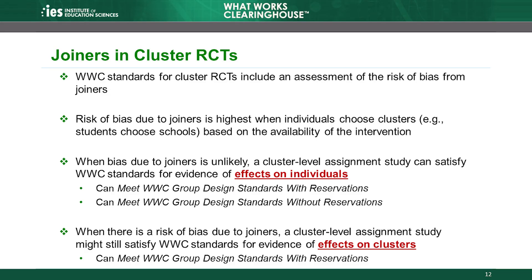The WWC distinguishes between studies that do or do not have a risk of bias due to joiners by talking about whether the studies can satisfy WWC standards for evidence of effects on individuals or only on clusters. When bias due to joiners is unlikely, a cluster study can satisfy WWC standards for evidence of effects on individuals. This means the WWC considers individuals in these studies — whether stayers or joiners — as good as randomly assigned, so the integrity of random assignment is maintained. Therefore, these studies are eligible for the highest WWC group design rating: meets WWC group design standards without reservations.